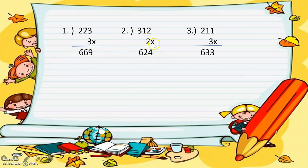Three hundred twelve times 2. So 2 times 2 equals 4, 2 times 1 equals 2, 2 times 3 equals 6 — so the answer is 624.